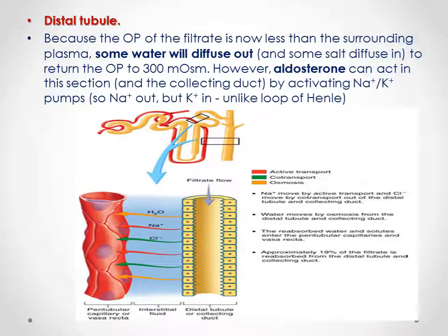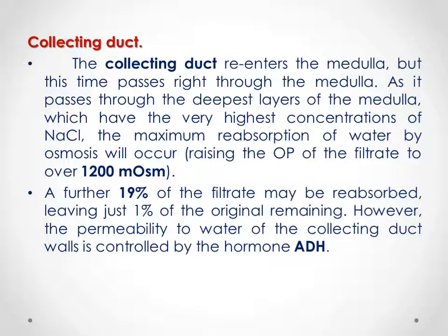In the next part of the nephron, the distal tubule, the osmotic pressure of the filtrate is now less than that of the surrounding plasma. Some water will diffuse out, tending to restore osmotic pressure to about 300 mOsm. An important regulator here is aldosterone hormone, which acts in this section and also in the collecting ducts to activate the sodium-potassium pump, causing sodium to move out while potassium moves in.